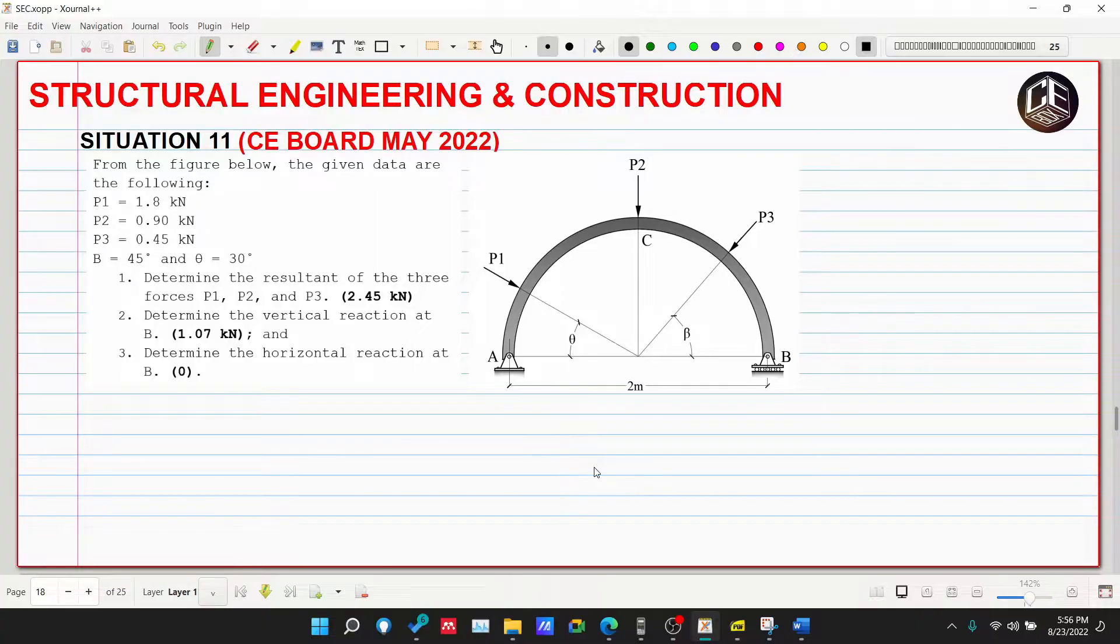The given data are the following: P1 is equivalent to 1.8 kilonewton, P2 is 0.90 kilonewton, P3 is equivalent to 0.45 kilonewton. Beta is equivalent to 45 degrees and theta is equivalent to 30 degrees.